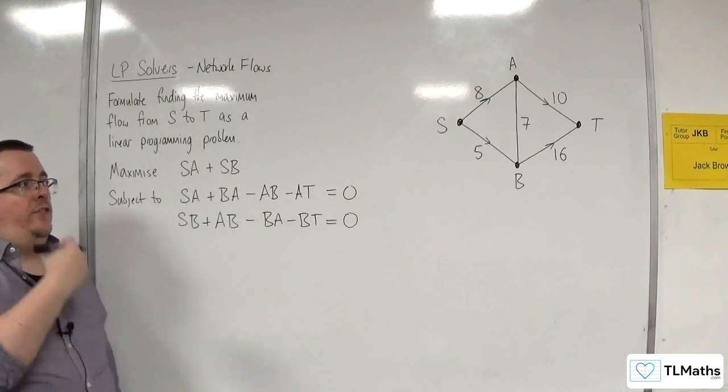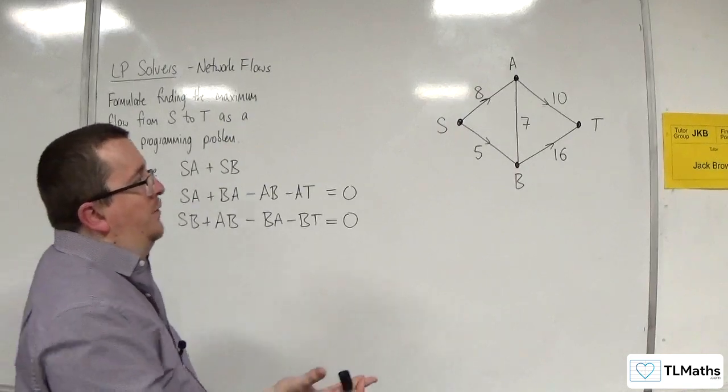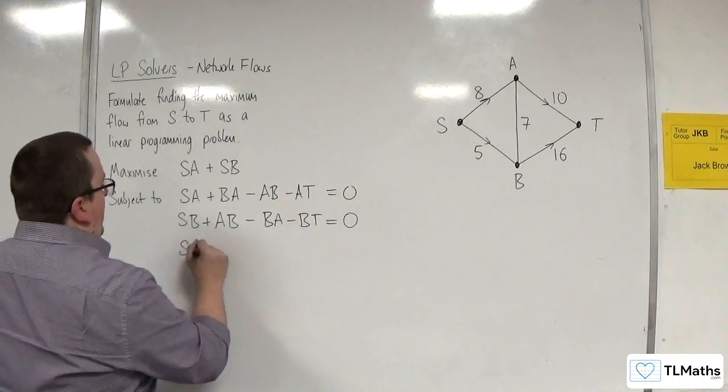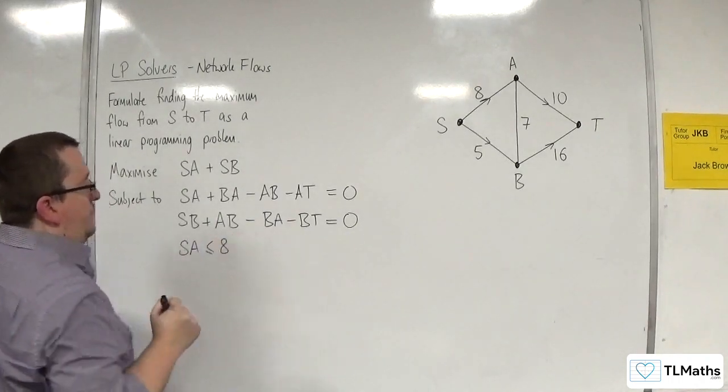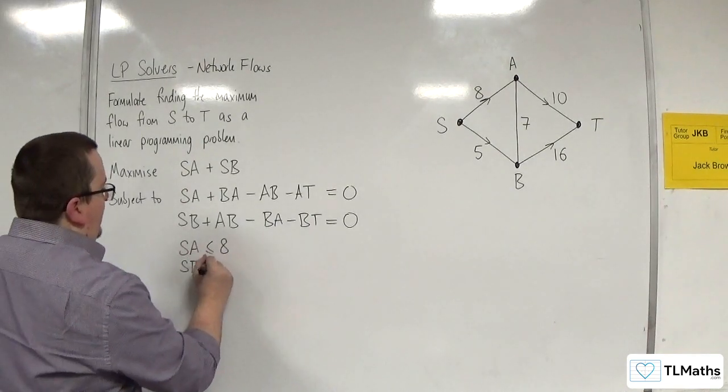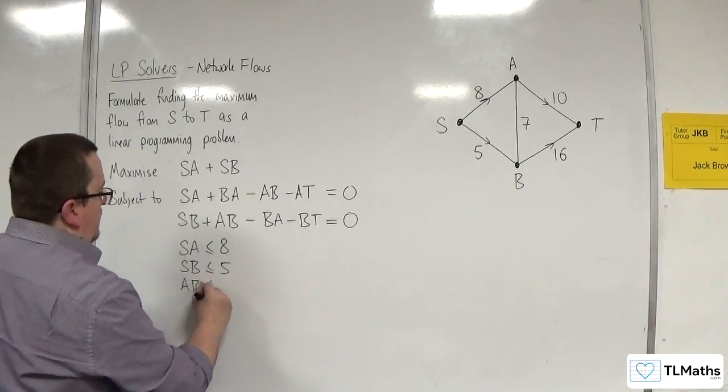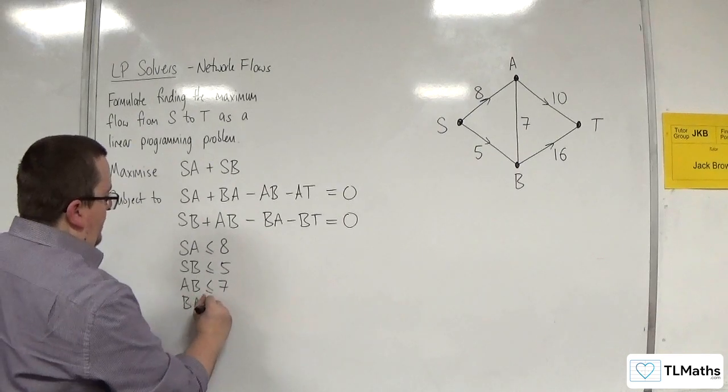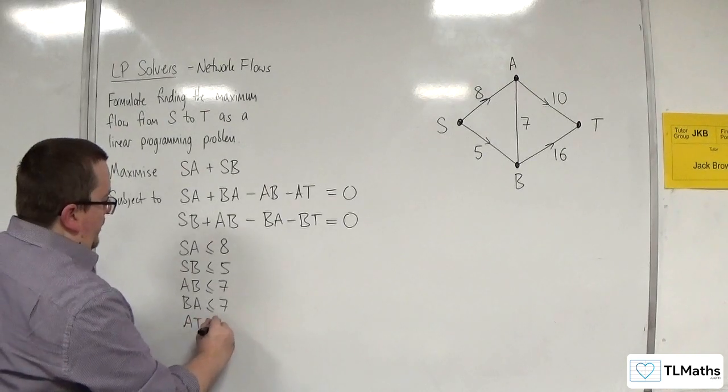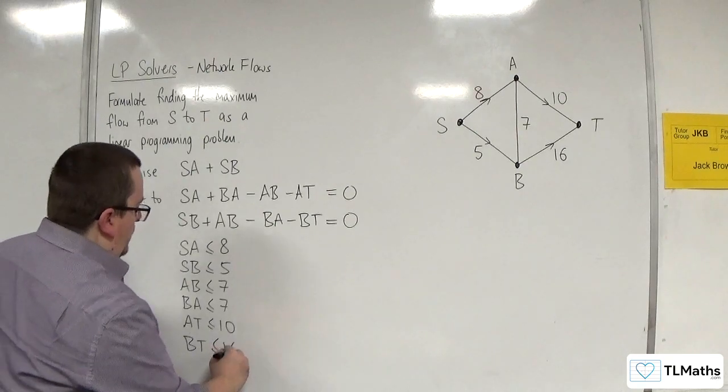Right. Now, I need some constraints to explain the actual lengths, my actual arcs, so the capacities rather. So I need to say that S, A is less than or equal to 8, so max is out at 8. S, B is less than or equal to 5. A, B is less than or equal to 7, and B, A is less than or equal to 7. A, T is less than or equal to 10, and B, T is less than or equal to 16.